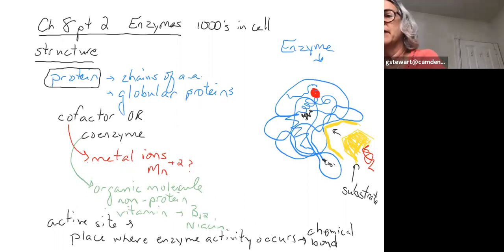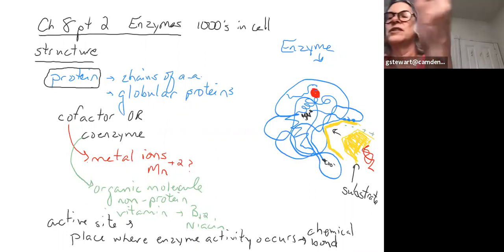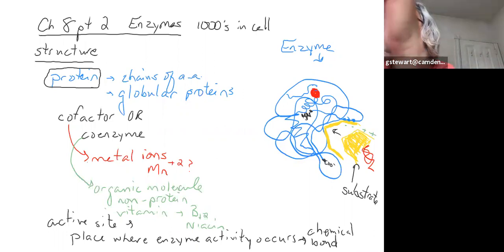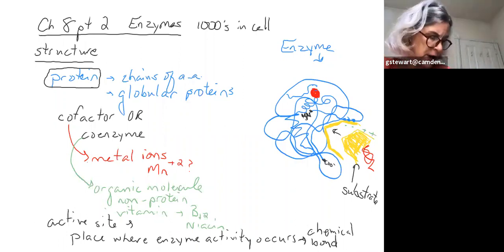If there are, for example, negative charges on the amino acid side groups along the active site, then the substrate has to be complementary — it would need to have positive charges there so they bind together. It could also be areas of hydrophobic or non-polar interaction. The charge complementarity across the active site is equally as important as shape and size.